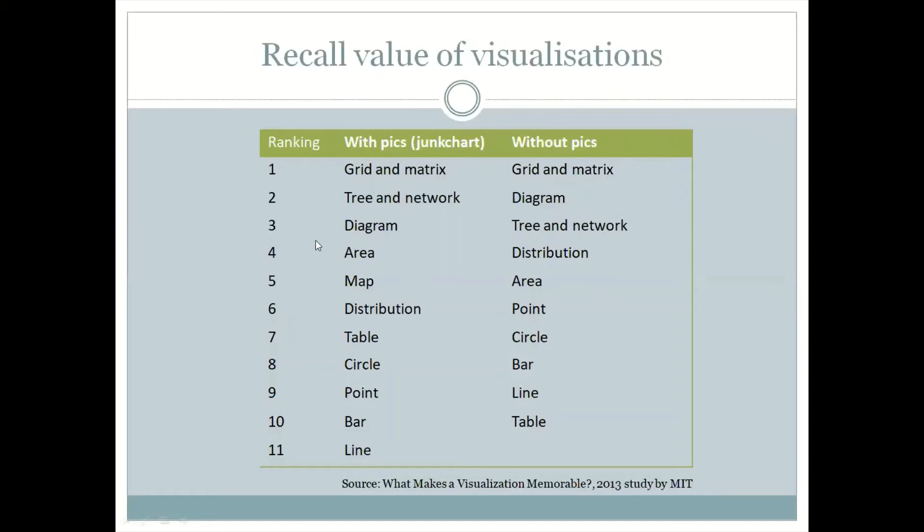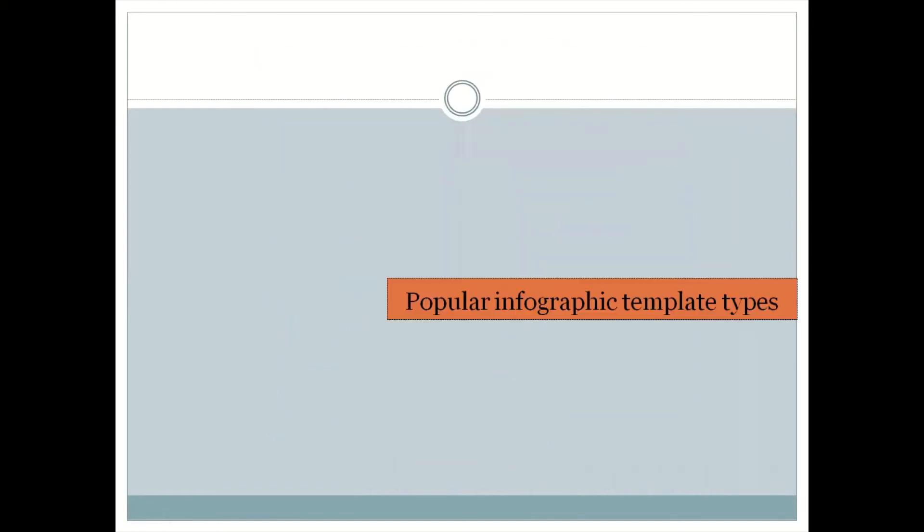Area is good, distribution is good, maps are good. Tables are good, circles suffice, and donut charts are good. Basically, depending on the content that you have, try to fix or stick to this.